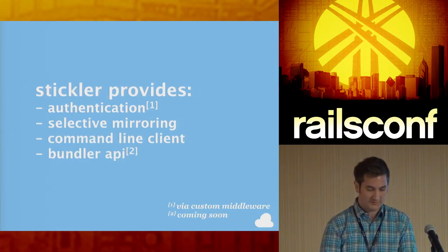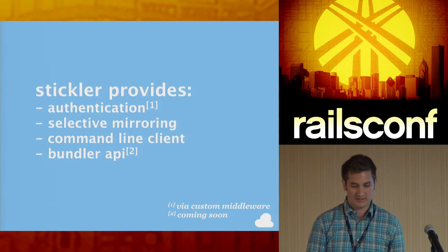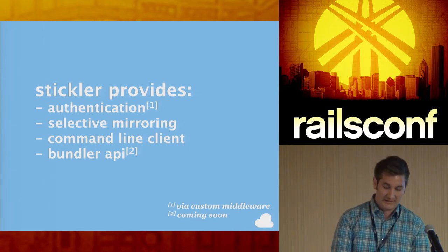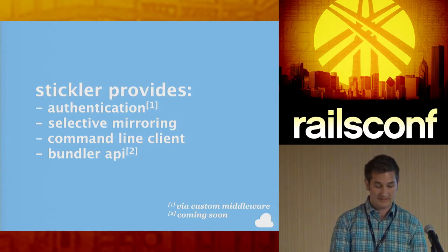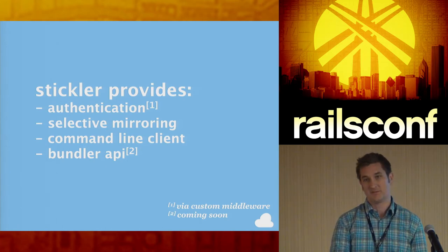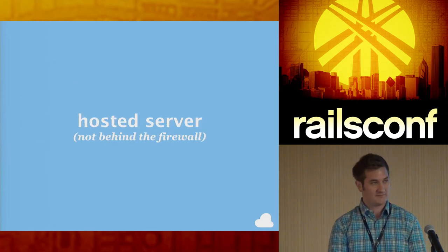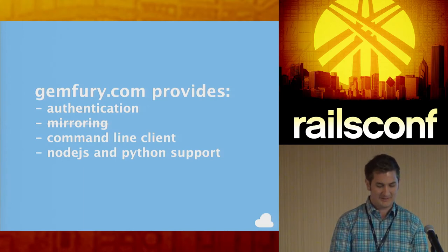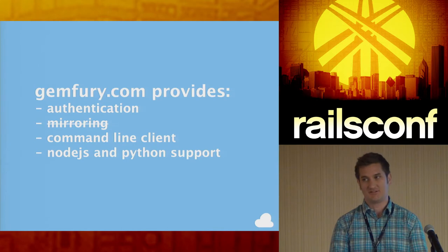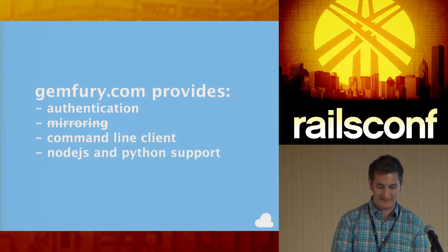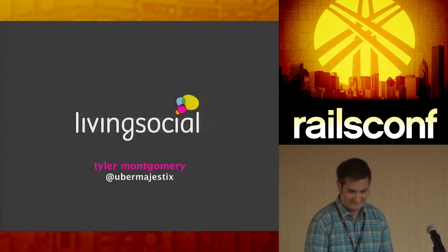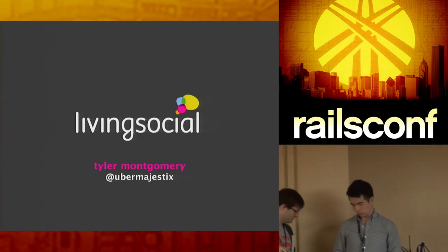Stickler provides authentication and selective mirroring — you can tell it to mirror specific gems or give it a whole Gemfile.lock and it mirrors everything. It has a full-featured command-line client, and the author notes it will support the Bundler dependency API in the next release. For a hosted option not behind your firewall, Gem Fury provides authentication, a command-line client, and supports npm and Python packages, though it doesn't appear to do mirroring. That's it — I'm Tyler, @ubermajestic on Twitter.